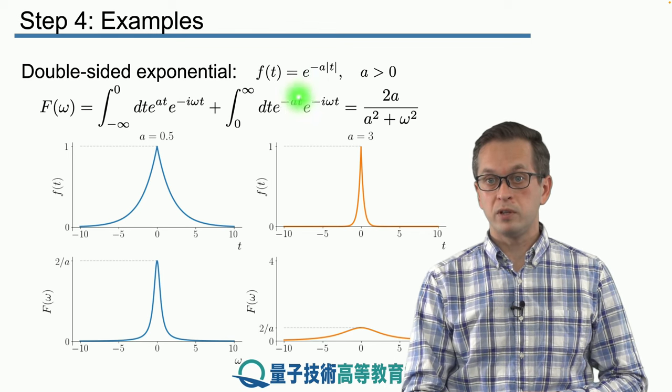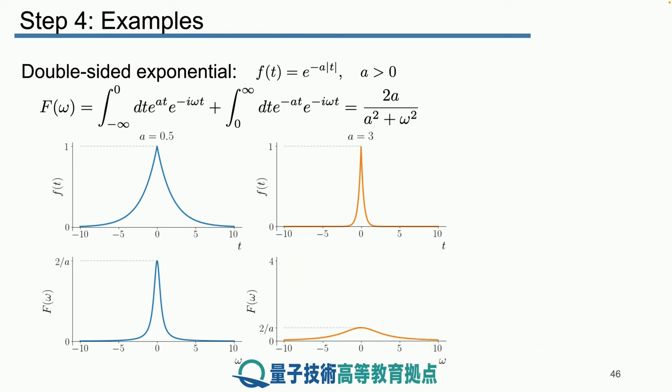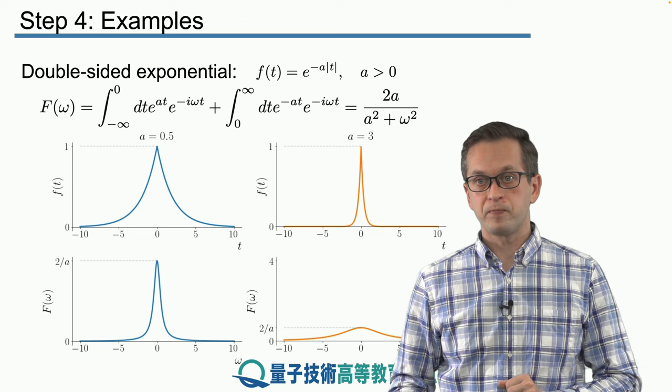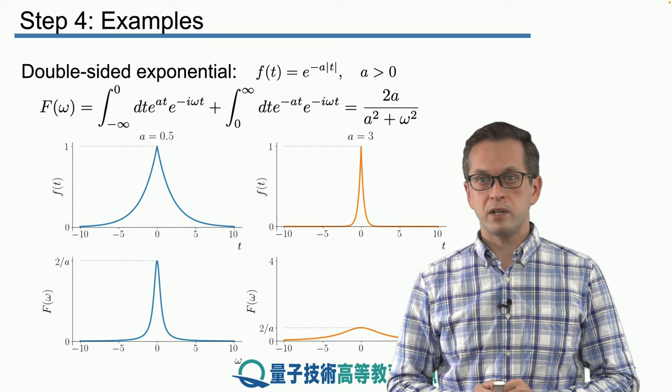And when we compute the forward Fourier transform, what we get is a distribution, we get a spectrum that's a lot more broader. It's not just the frequencies that are very close to omega equals to zero that are important, but it's also frequencies that are a little bit further away. And this is generally always the case.